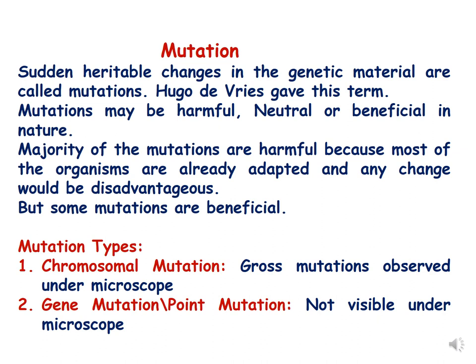Mutations are of two types: chromosomal mutations and gene mutations. Chromosomal mutations happen at a gross level and can be observed under a microscope — we have already studied these in the unit on numerical and structural changes of chromosomes. Gene mutations happen at the point level or basic level, so they are not visible under a microscope.